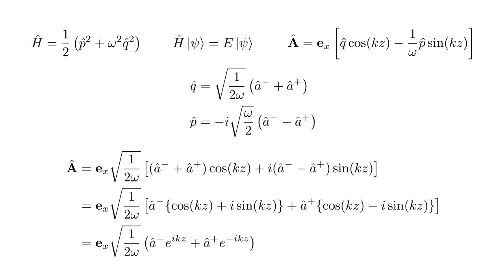Finally, we identify the cos ± i sin expressions as e^{ikz} and its complex conjugate e^{-ikz}. So Â = e_x√(1/2ω) times [â e^{ikz} + â† e^{-ikz}].